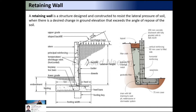This type of structure is used to retain or hold different masses like earth, loose earth, different types of materials like debris, or even water. So to retain these kinds of materials we use retaining walls. There are different components of a retaining wall — let us discuss them one by one.